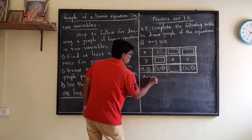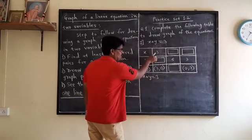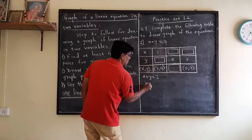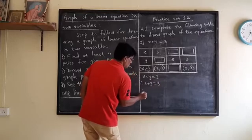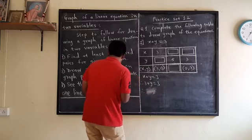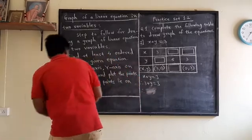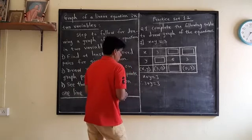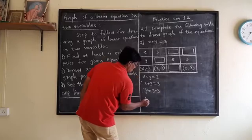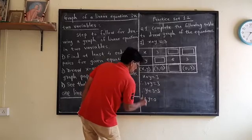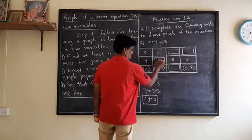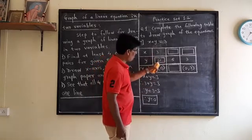x plus y is equal to 3. x value is 3, therefore x value 3 plus y is equal to 3. 3 plus y is equal to 3. Therefore y is equal to 3 minus 3. y is equal to 0. This is the answer. y is equal to 0. Coordinates: 3, 0.